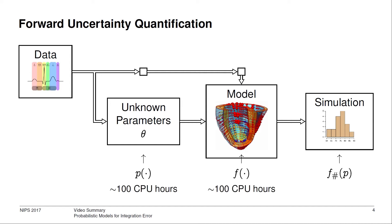The forward uncertainty quantification problem involves taking a probability distribution, p, over these parameters, representing our current state of knowledge, and pushing this uncertainty forward through the computational cardiac model, denoted f.